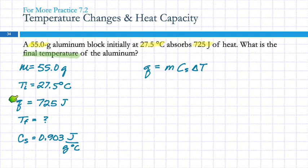So, I've got M, I've got Q, I've got C sub S. So, I've got everything here except delta T. If I found delta T and I know the initial temperature, I could figure out what the final temperature is. So, I'm going to rearrange this equation to solve for delta T.